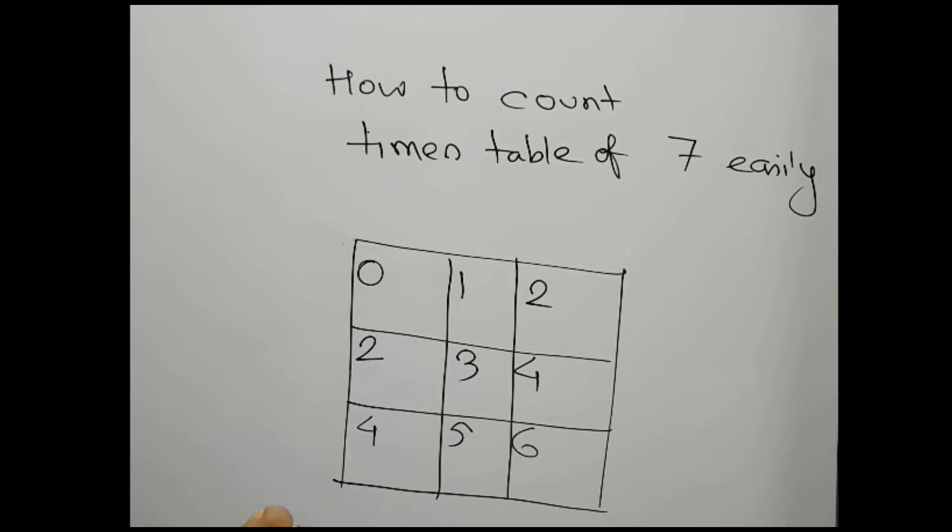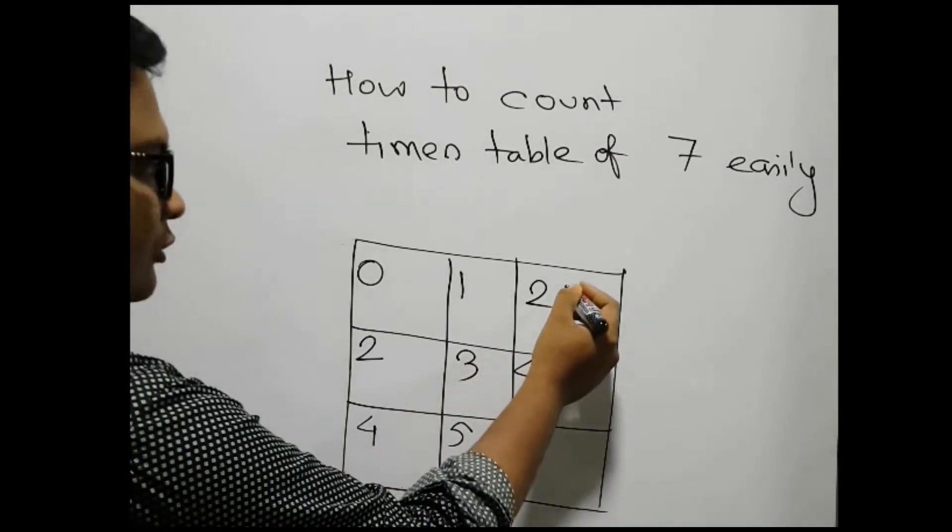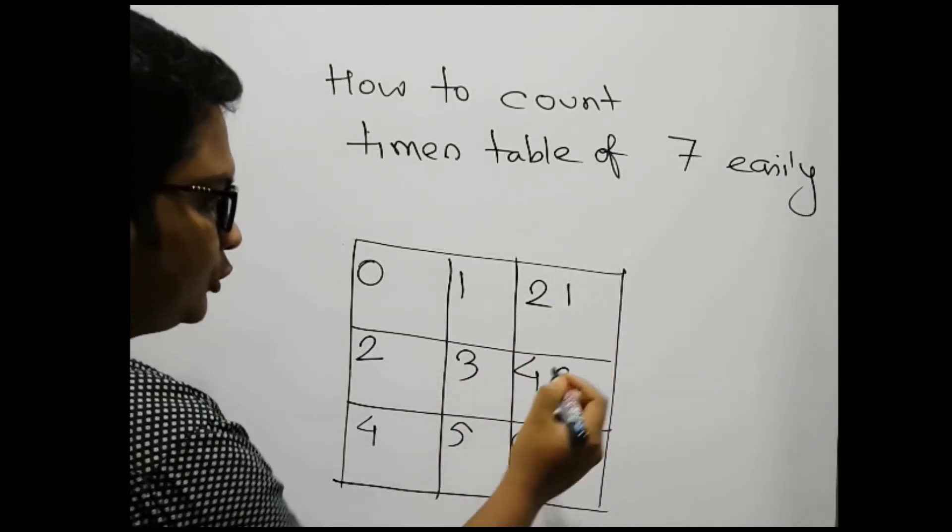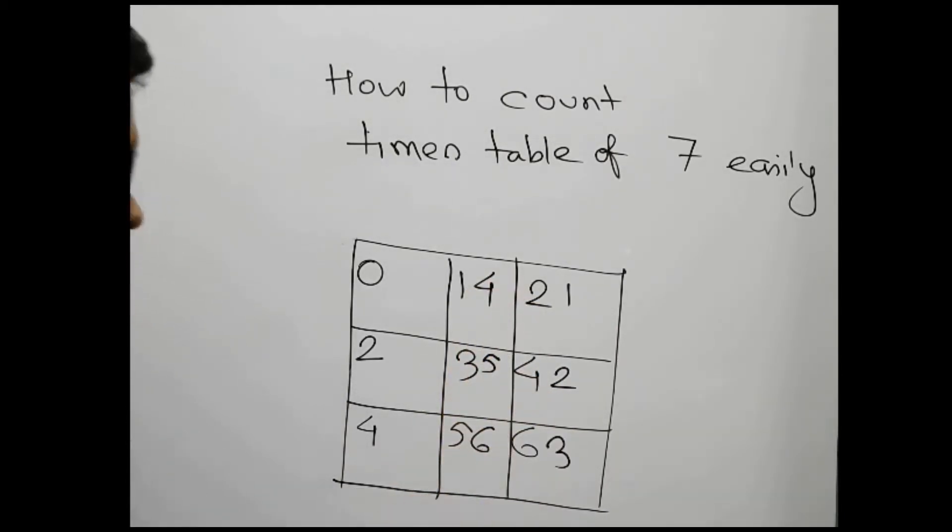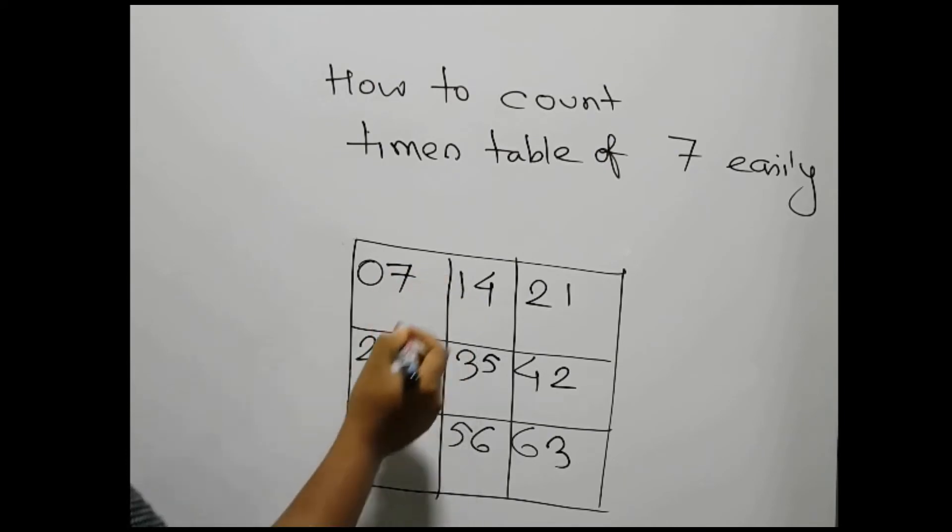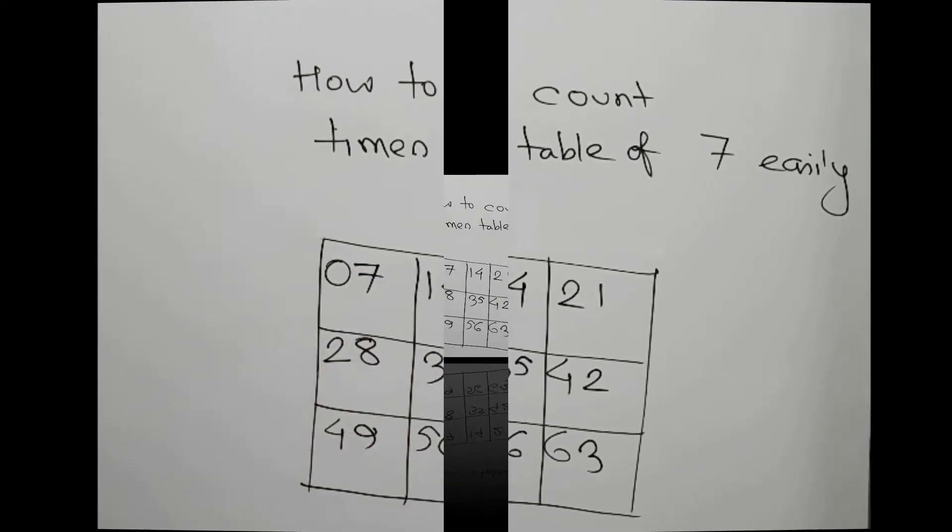We'll start from the first column. We write down 1, 2, 3, 4, 5, 6, 7, 8, 9, and we are done.